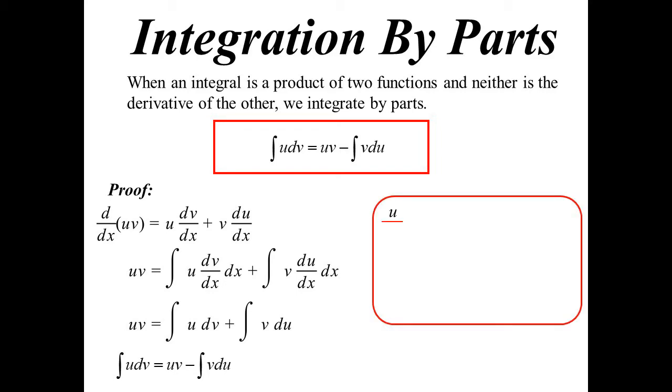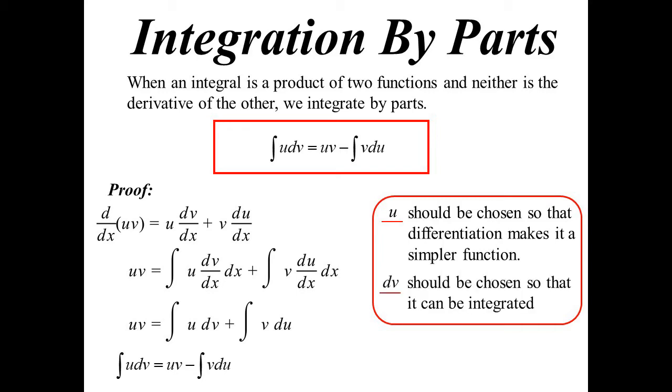Now the choice of u and v becomes important. How to do it? Well, if you look at my formula, u needs to be something that I can differentiate, because in my formula I'll end up with a du. Ideally it would make that function simpler. dv then needs to be something I can integrate.